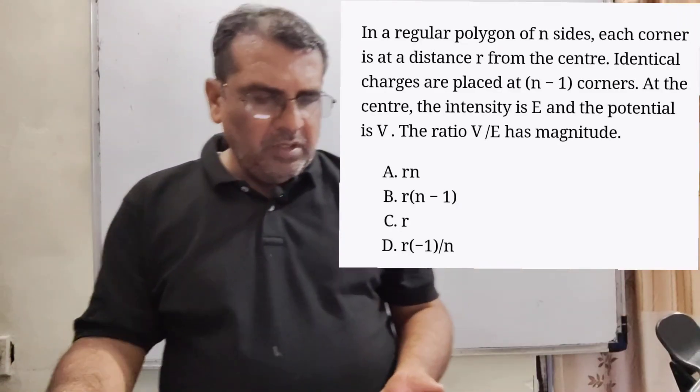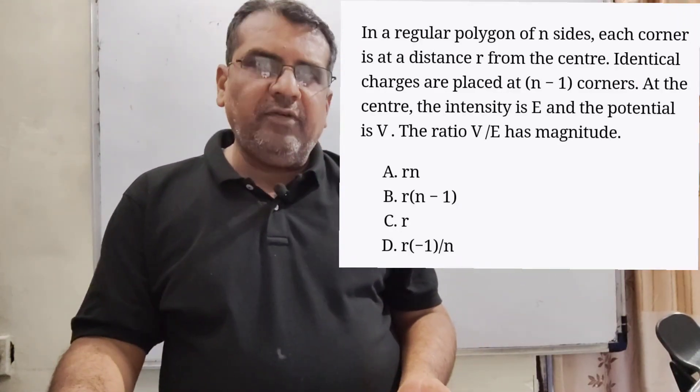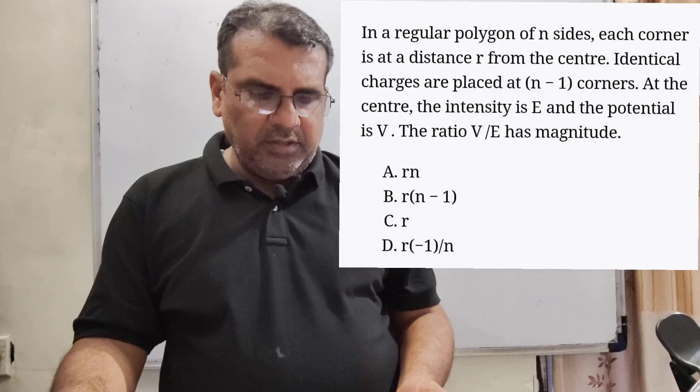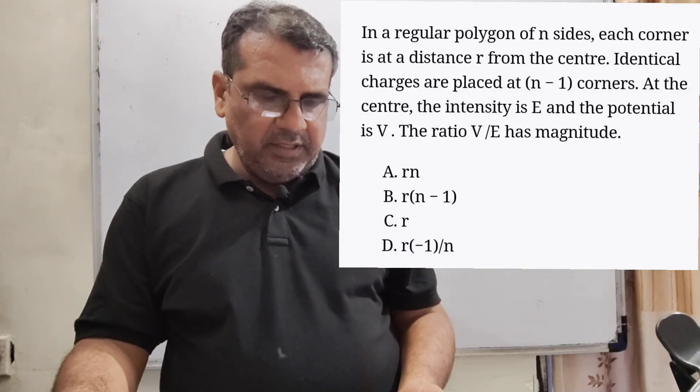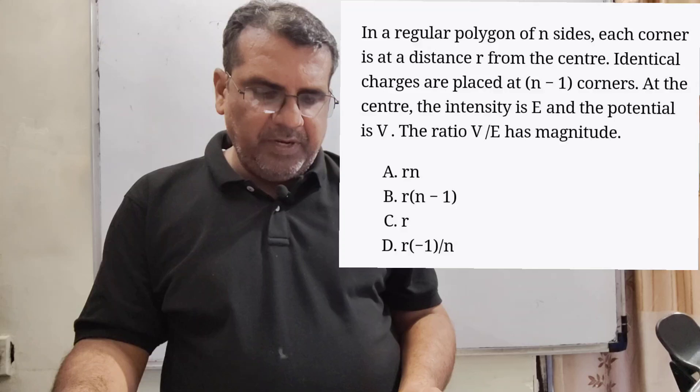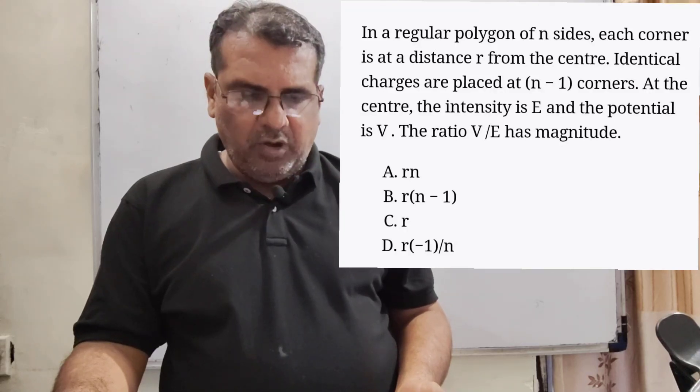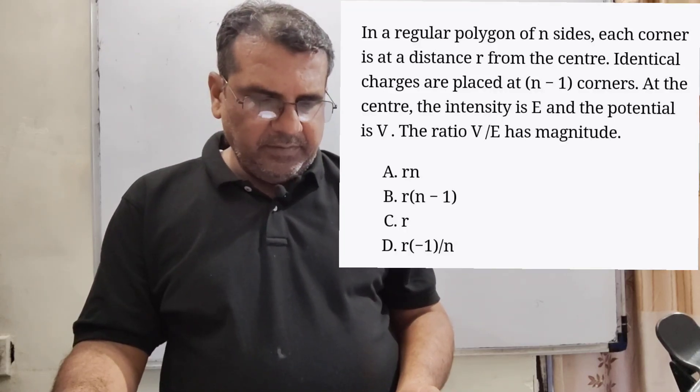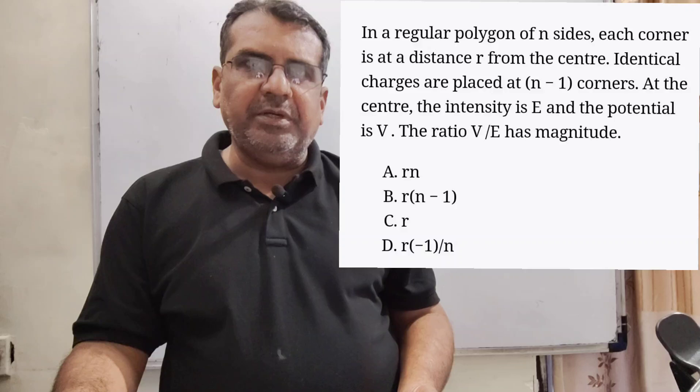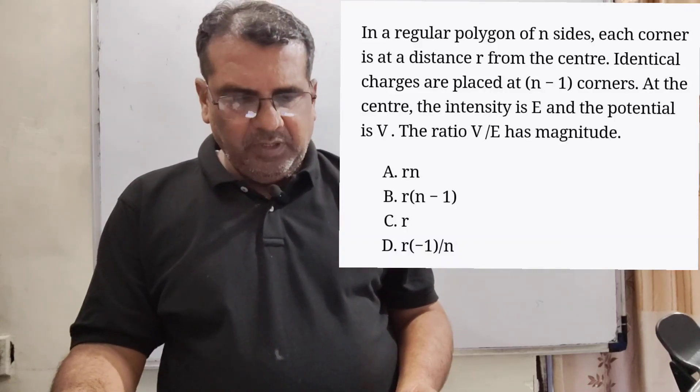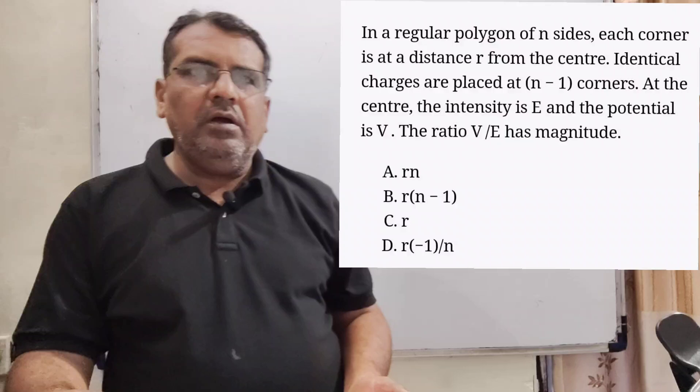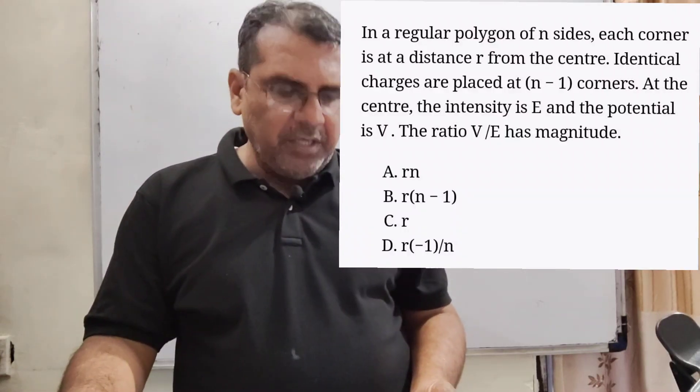Now, here is the question. In a regular polygon of n sides, each corner is at a distance r from the center. Identical charges are placed at n minus 1 corners. At the center, the intensity is capital E and the potential is capital V. The ratio V by E has magnitude.